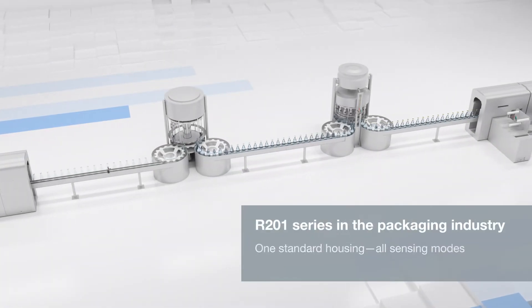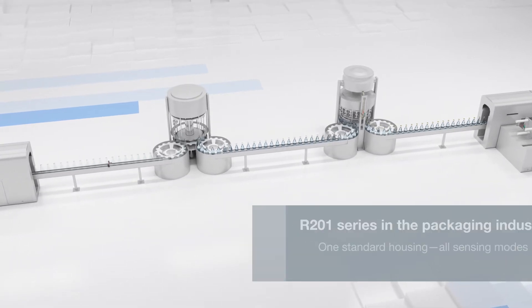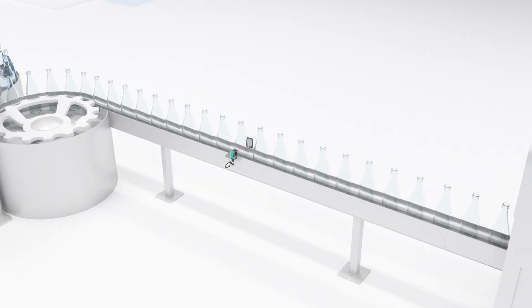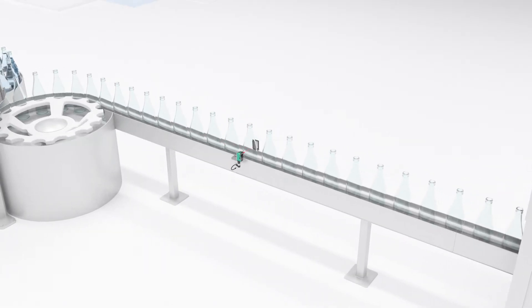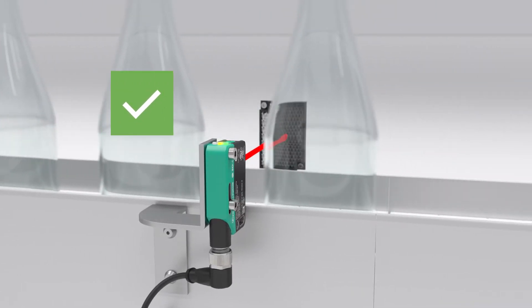Different sensor variants of the R201 series are used in bottle systems as well. R201 series retro-reflective sensors reliably detect clear glass, eliminating false trips and counting errors in bottling plants.